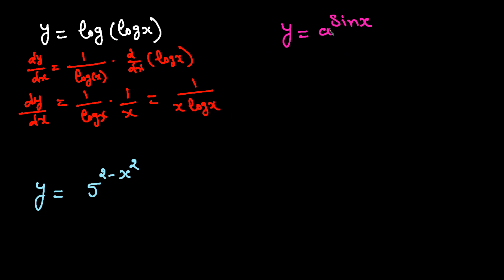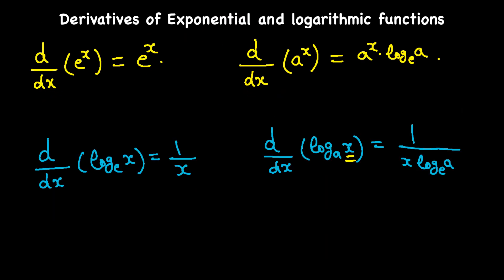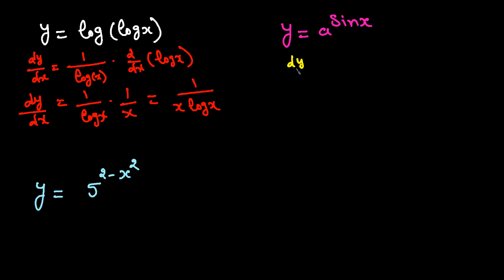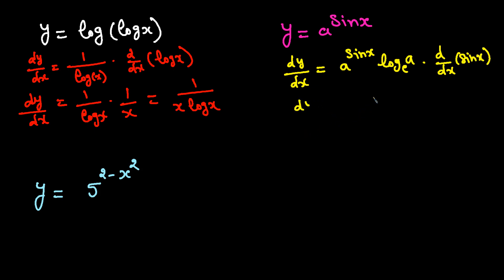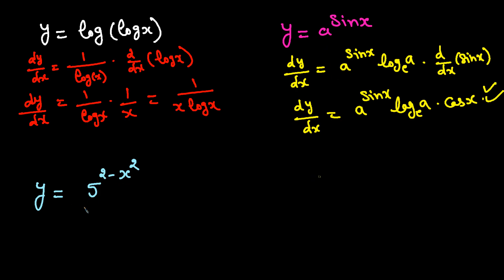Now an exponential example where the base is not e — using the rule for a to the x. For y equals a raised to power sin x, dy/dx is written as a raised to power sin x, times log base e of a, times the derivative of sin x, which is cos x. So dy/dx equals a to the power sin x times ln a times cos x.